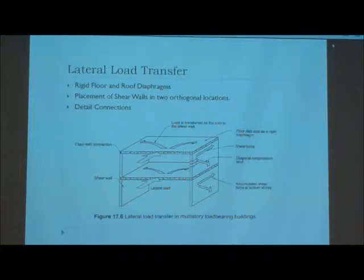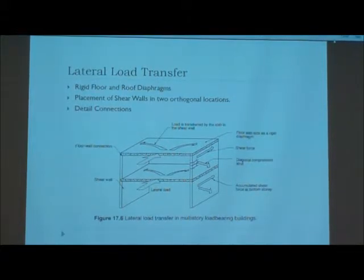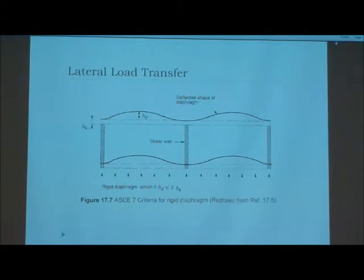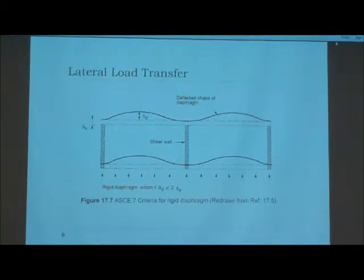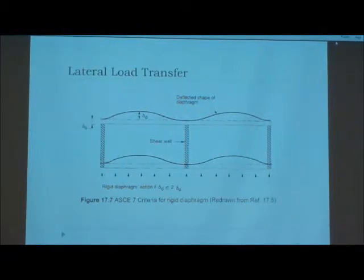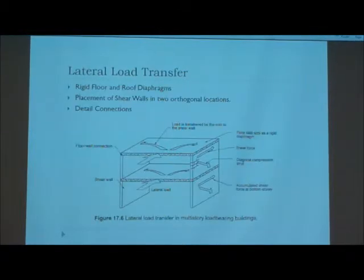The way you can determine if it is a rigid diaphragm for your floor and roof is this equation at the bottom. It shows that if your diaphragm deflection is less than two times your story drift, then it's considered a rigid diaphragm. So, that covers the rigid floor-to-roof diaphragms.